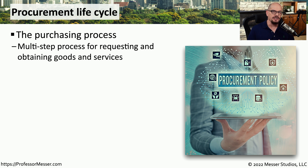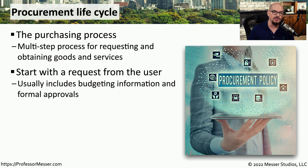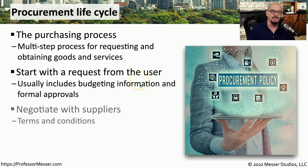In most organizations, there's a very well-defined and specific process for acquiring new assets. This purchasing process commonly has multiple steps and different parts of the organization are involved. This usually starts with a request from the user, and it often includes budgeting numbers so we know exactly how much money will be spent for this particular request. These usually have to go through a number of different approvals, so there might be a manager or director that's able to sign off on this particular request. This request is usually forwarded to the purchasing department, who's responsible for centrally negotiating with vendors and third parties to be able to acquire these assets.